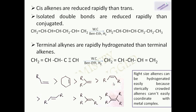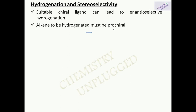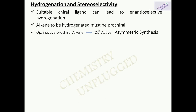Wilkinson's catalyst is not chiral in nature but can be converted into a chiral catalyst by replacing its triphenylphosphine groups with chiral phosphines. A suitable chiral ligand can lead to enantioselective hydrogenation. Enantioselective hydrogenation means we want to generate an enantiomerically favored product — a particular chiral product. The alkene to be hydrogenated must be prochiral, meaning it must have a structure that leads to R or S chirality.